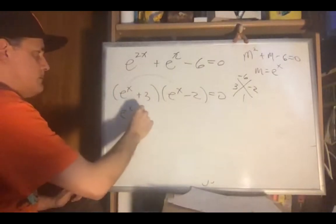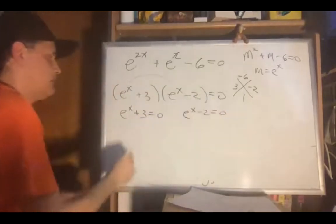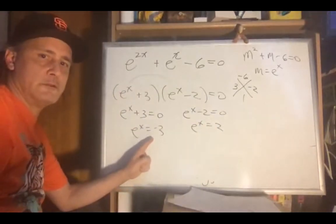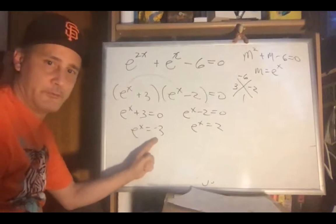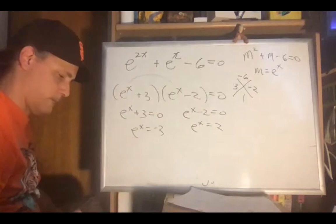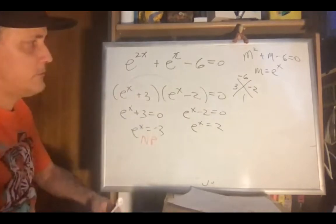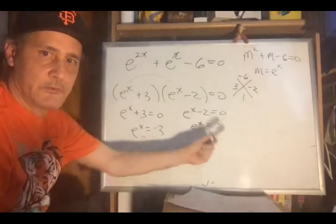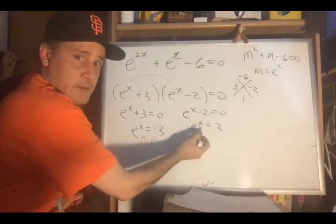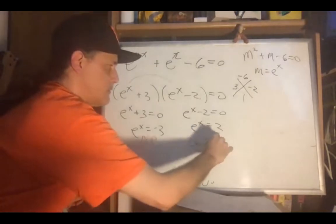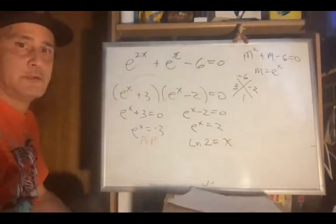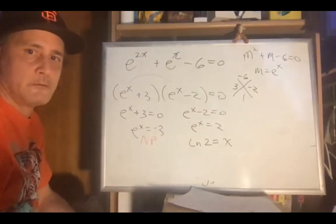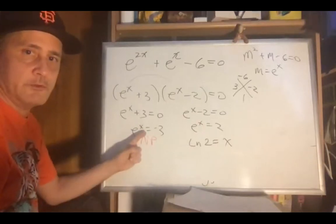Now it's just the zero product property with these two expressions equal to 0. So we solve: e to the x equals negative 2 — that's not possible, because e is a positive number and no exponent to a positive number produces a negative. But e to the x equals 2 is possible. So we reverse to the logarithm: the exponent is x, the value is 2, so x equals ln 2. The first one we exclude because it's not possible.